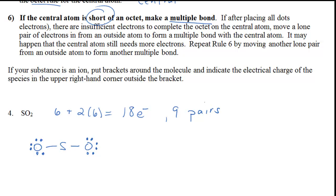We've placed 8 pairs — 16 electrons. We have one more pair to place, and the only place we can put it is on the central atom. So once the outer atoms are satisfied, we move to the central atom. We have now placed all 18 electrons. Are we done? No, not quite — because the sulfur, the central atom, has not satisfied the octet rule. It only has 6 electrons. What do we do? Look at Rule 6: if the central atom is short, make a multiple bond.